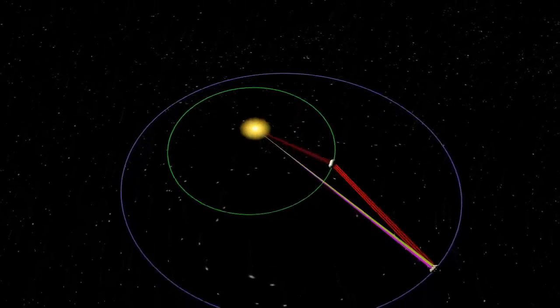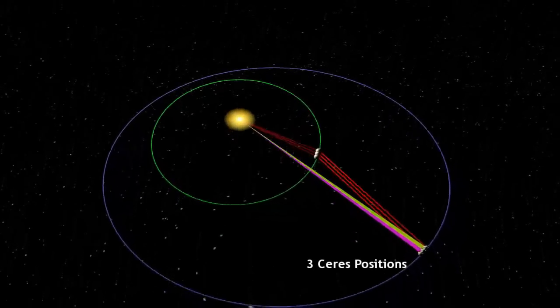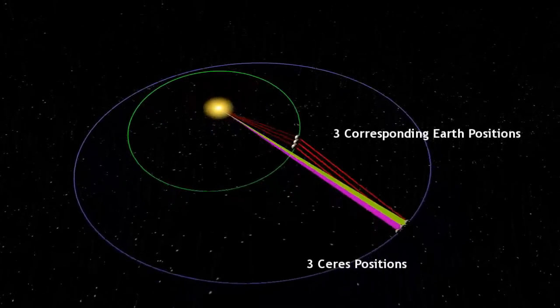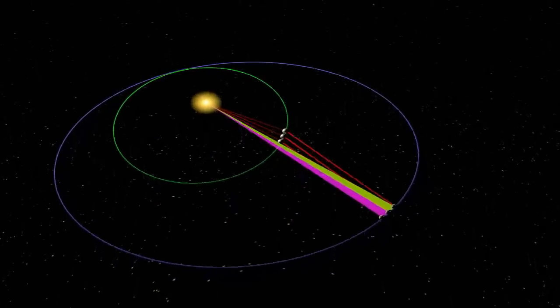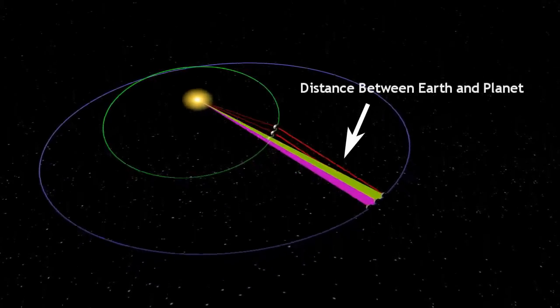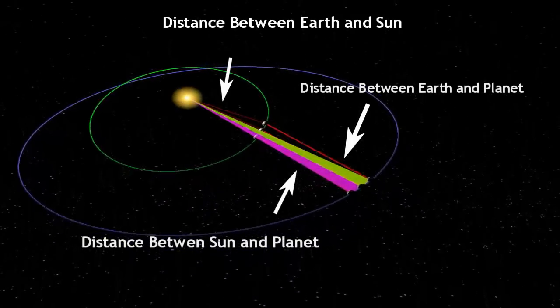Based on Kepler's model, if we were to take three positions of the asteroid, we would have a set of relations in motion involving the relation between the Earth and the planet, the sun and the planet, and that between the Earth and the sun.